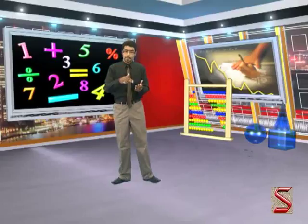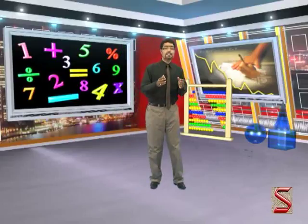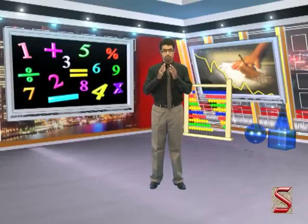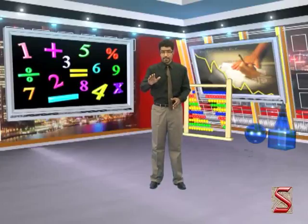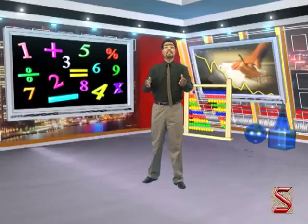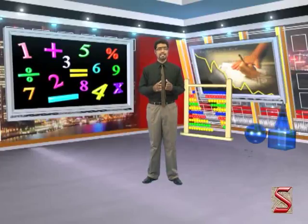The principal and the interest put together is known as amount, and it is denoted by A. Hope you all are clear with these terms. Now let's learn about simple interest, that is SI.